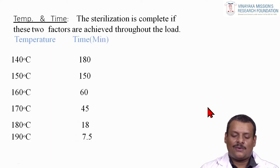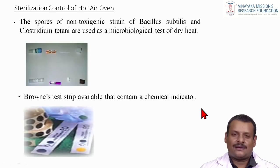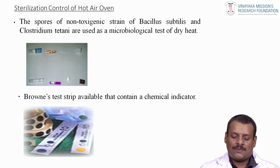The temperature used for the hot air oven depends on the manufacturer's specifications; typically it is 160°C for 60 minutes, though this may vary. Sterilization control of the hot air oven is done using spores of a non-toxicogenic strain of Bacillus subtilis and Clostridium tetani as a microbiological test of dry heat. A Browne's test strip containing a chemical indicator is also available.